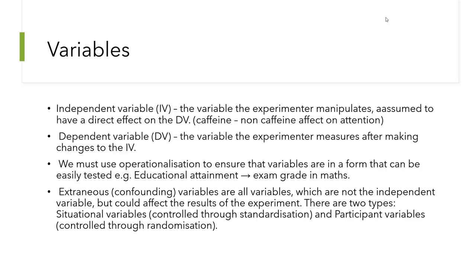Participant variables are another type of confounding variable. We try to minimize these through the randomization process and other techniques such as matched participants.